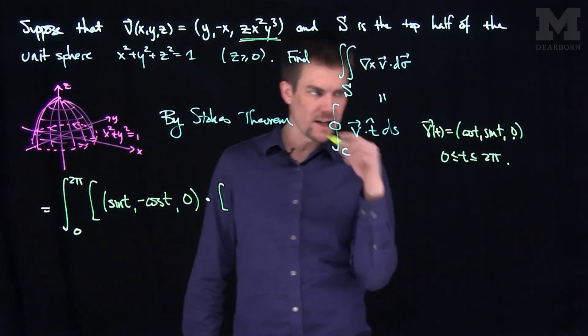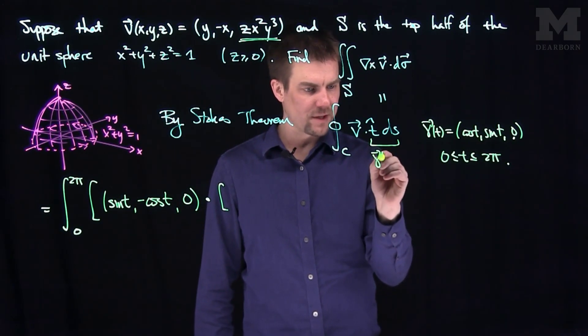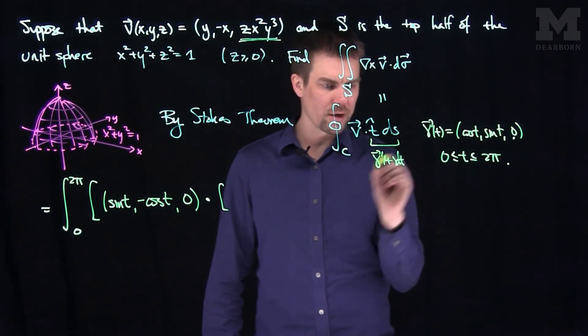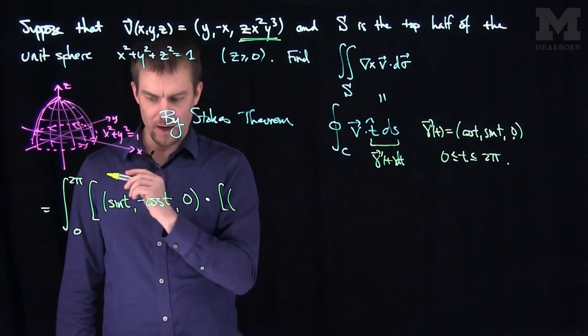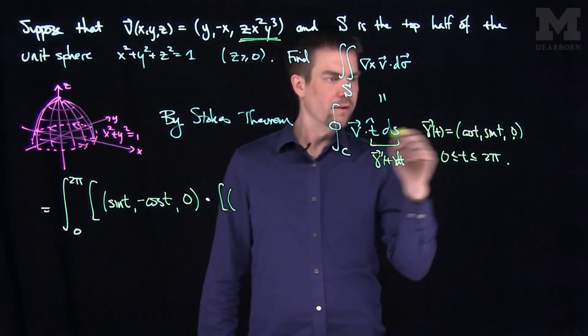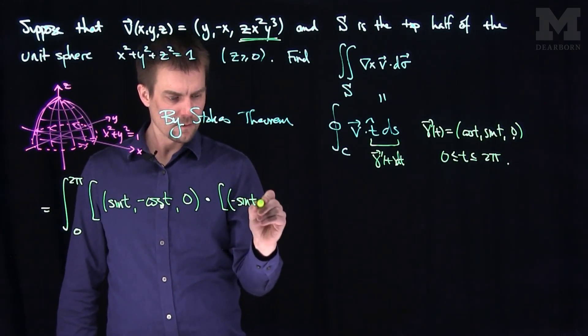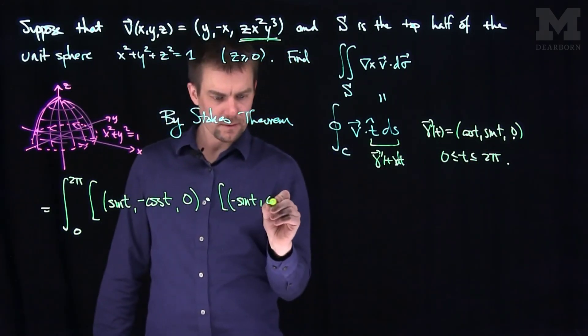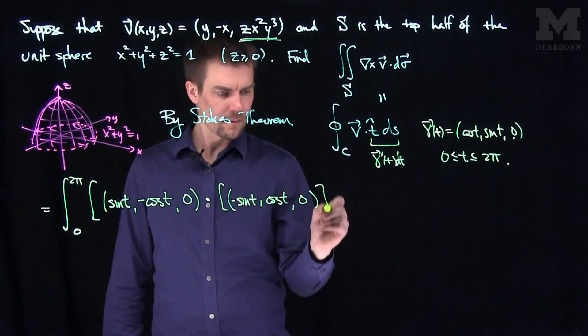And we're going to dot this with the tangent vector to the curve. This is already an arc length parameter, so t hat ds is just going to be, this thing over here will just be gamma prime of t dt, because we're already an arc length parameter. So what's gamma prime of t? Well, we're going to get the derivative of cosine, which is negative sine, and the derivative of sine, which is cosine, and then zero dt.